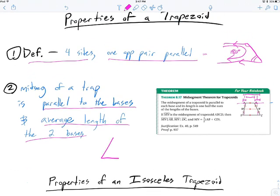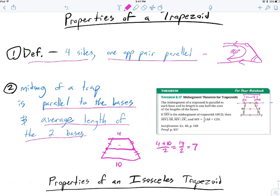The two properties are: the mid-segment is parallel to the two bases, and its length is the average of the two bases. For example, if the top base is 4 and the bottom is 10, you take 4 plus 10 divided by 2, which is 14 divided by 2 — the mid-segment length is 7.